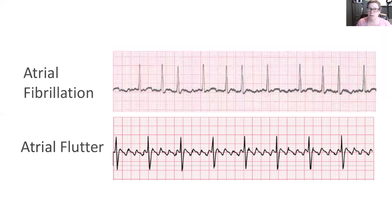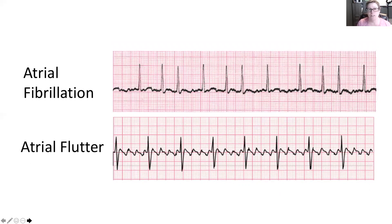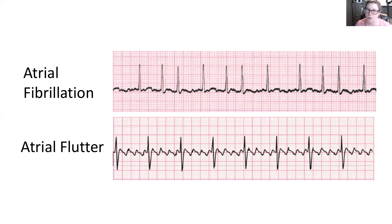If we compare this to atrial fibrillation, I want you to see the difference. Both of these arrhythmias are being driven by the tissue in the atria. We can see in atrial fibrillation the fine fibrillatory waves, that chaotic pattern, the irregular QRS contraction. And how that is very different in atrial flutter — we can see P waves, they just don't look round and upright, which lets me know the SA node is not responsible for those contractions.